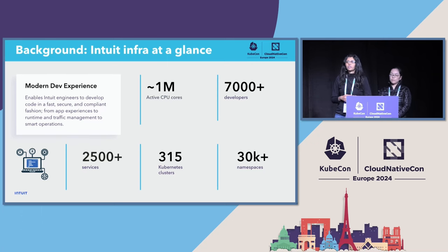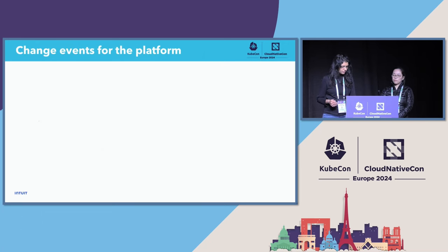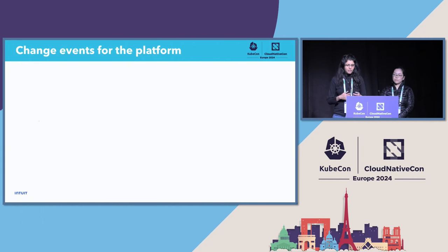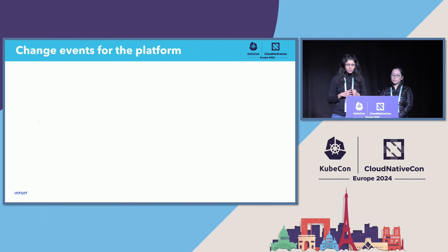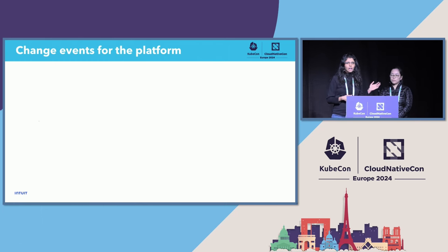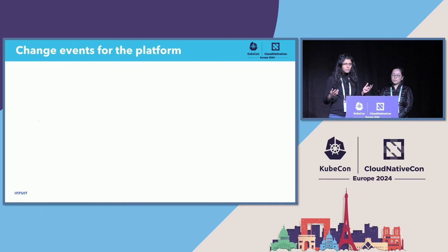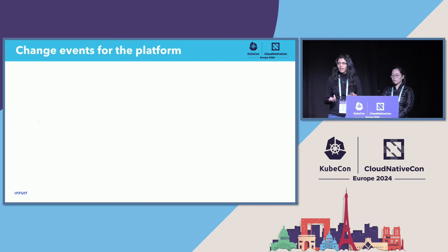What does it take to observe such a large fleet of clusters? Even when there are no big change events happening in a Kubernetes cluster, it is challenging to observe it, as you might all know, because there are constant moving parts. The pods are constantly getting resized because of Kubernetes resource optimization strategies.